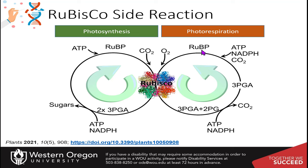The oxygen also interacts with ribulose 1,5-bisphosphate, but instead of forming two molecules of 3-phosphoglycerate, it can only form one molecule of that and one molecule of 2-phosphoglycolate. This product can no longer be utilized in creating sugar or recovering enough of the ribulose 1,5-bisphosphate needed to keep the Calvin cycle going, making this enzyme really, really less efficient.